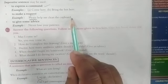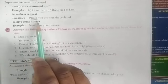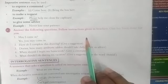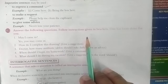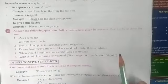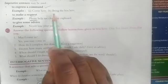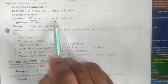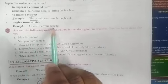The next point is to give some advice, like 'Never lose your patience.' Teachers and parents often give advice like this. So here we are getting three categories: command — 'Come here' and 'Bring the box here'; request — 'Please help me clean the cupboard'; and third, to give some advice — 'Never lose your patience.'